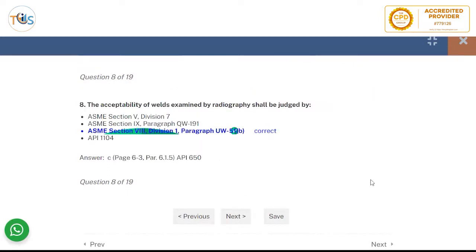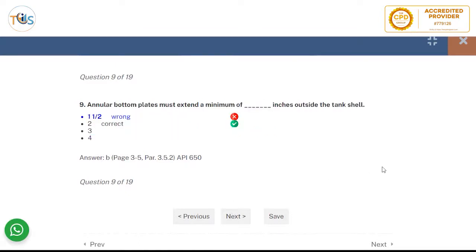The acceptability of welds examined by radiography shall be judged by ASME section 8. General bottom must extend a minimum of two inch. So the two inch is the correct answer from outside the tank shell.